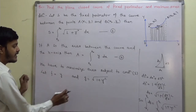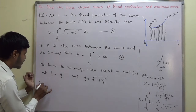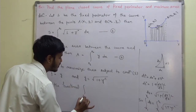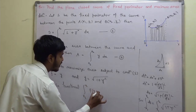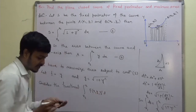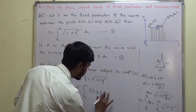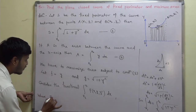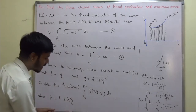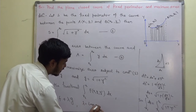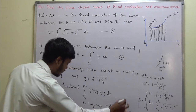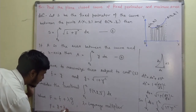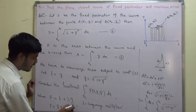After writing that, we consider the new functional: integral from x1 to x2 of F(x, y, y') dx, where F = f + λg, and λ is the Lagrange multiplier. So F = y + λ√(1 + y'²). This is our F.